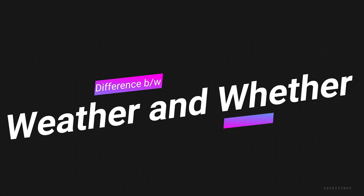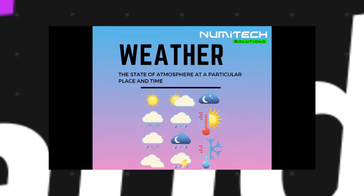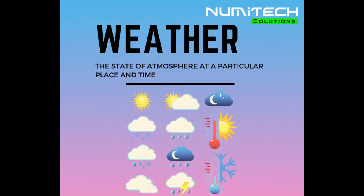The fourth homophone helps us understand the difference between 'weather' and 'whether.' 'Weather' is used when referring to the atmospheric conditions of a particular place. For example, the weather of Ludhiana is cloudy, whereas the weather of Bengal is rainy.